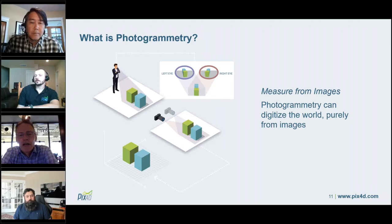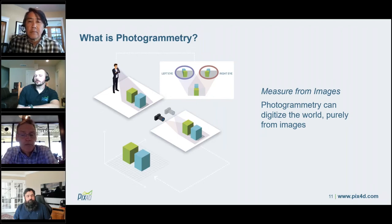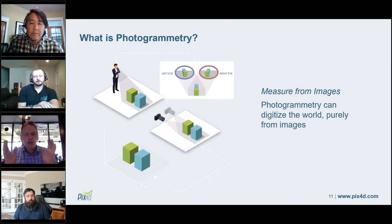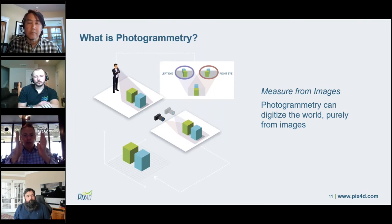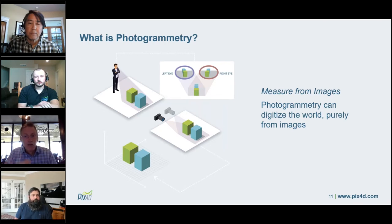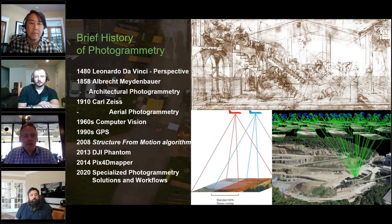Photogrammetry is the science our software is based on. The word itself means 'measure from images.' Most people have an intuitive idea of how it works — your eyes give you binocular vision, meaning you can sense depth by parallax from your two eyes. That's essentially how photogrammetry works: it allows you to measure distances and locations in the real world from multiple photographs.